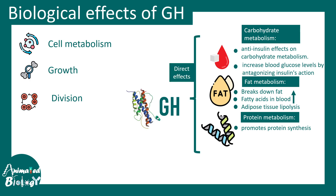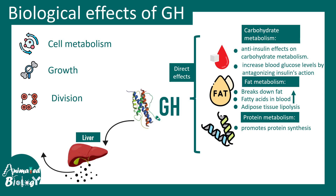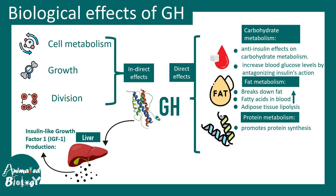There are also indirect effects. Growth hormone triggers the liver to secrete IGF-1, a protein that can regulate cell metabolism, growth, and division in an indirect fashion. IGF-1 mediated by growth hormone is a key trigger in this entire process.